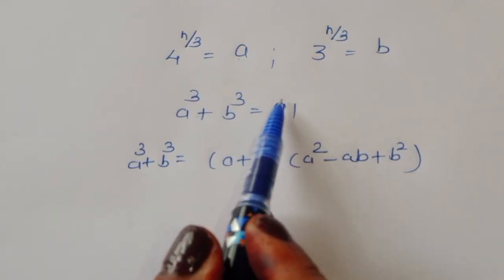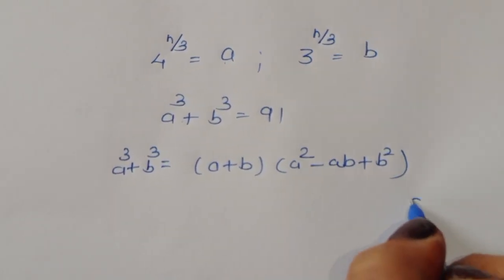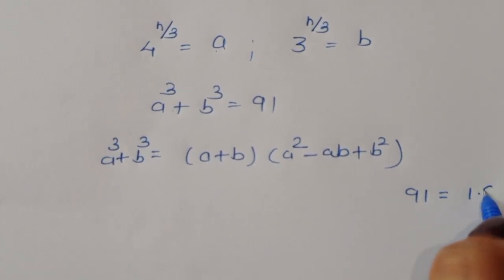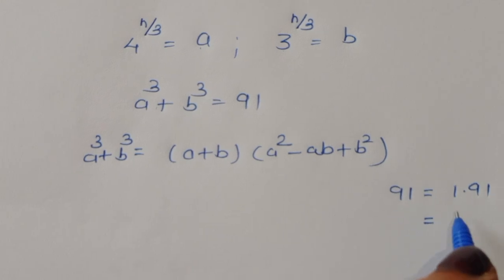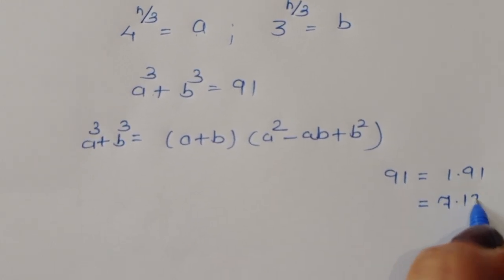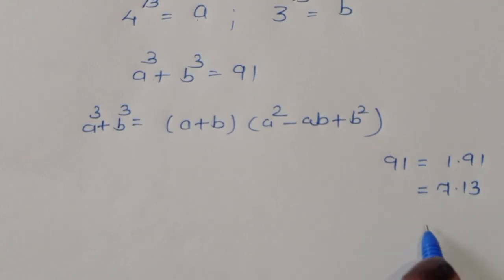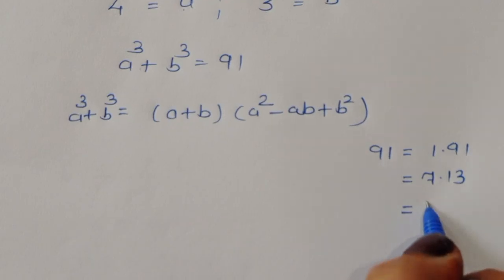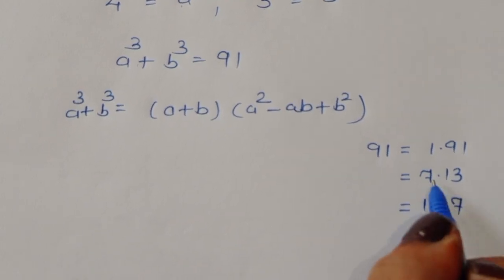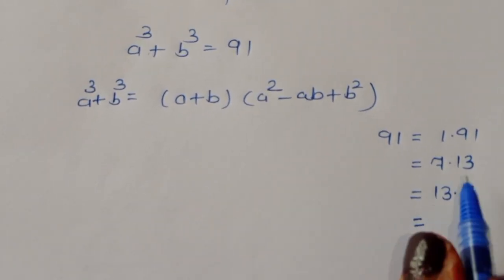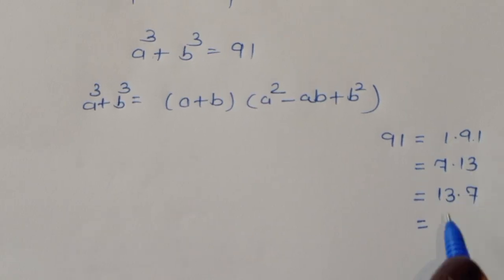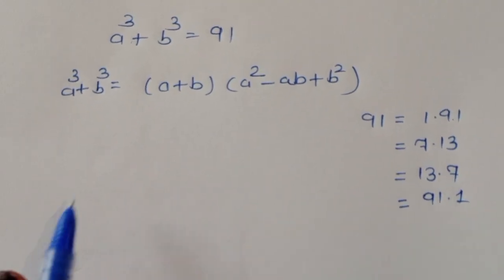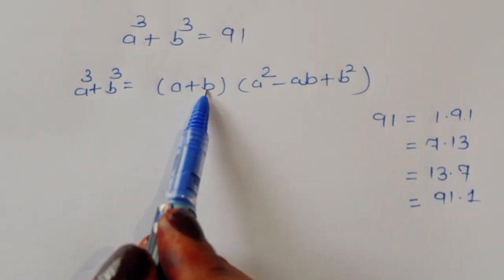Now we need to find the factors of 91. The factors of 91 are: 1 × 91, 7 × 13, 13 × 7, and 91 × 1.